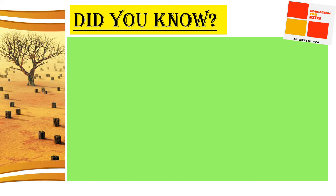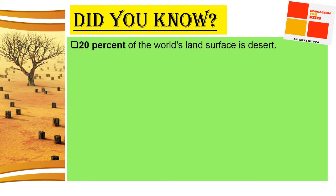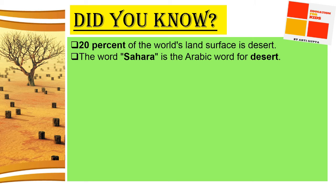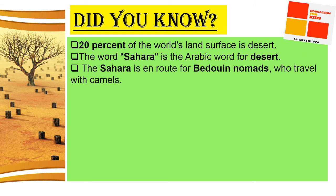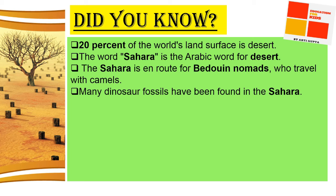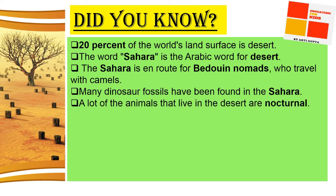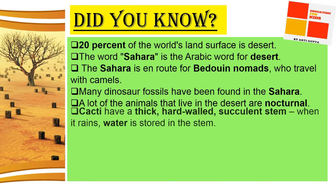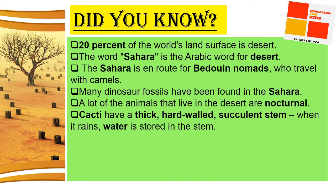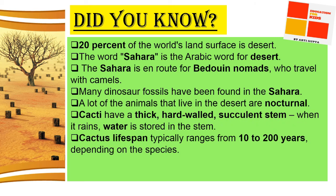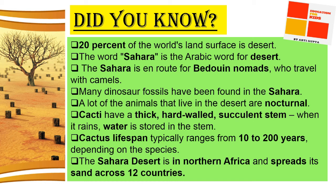Did you know — here are some interesting facts! 20% of the world's land surface is desert. The word 'Sahara' is an Arabic word for desert. The Sahara is a route for Bedouin nomads who travel with camels. Many dinosaur fossils have been found in the Sahara Desert. A lot of animals that live in the Sahara are nocturnal. Cacti have a thick, hard-walled succulent system — when it rains, water is stored in them. A cactus lifespan typically ranges from 10 to 200 years. The Sahara Desert in North Africa spreads its sands across 12 countries.